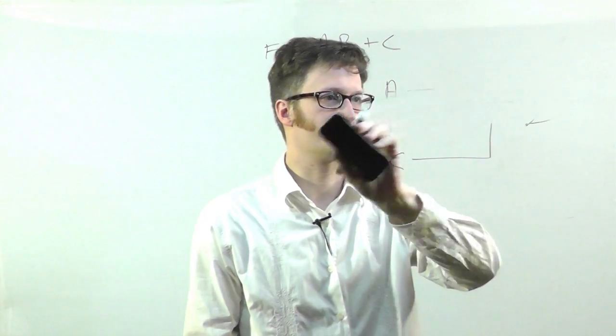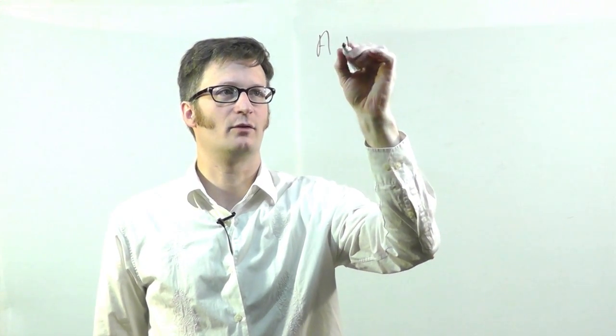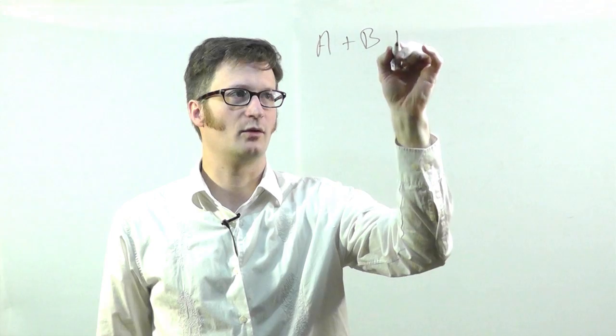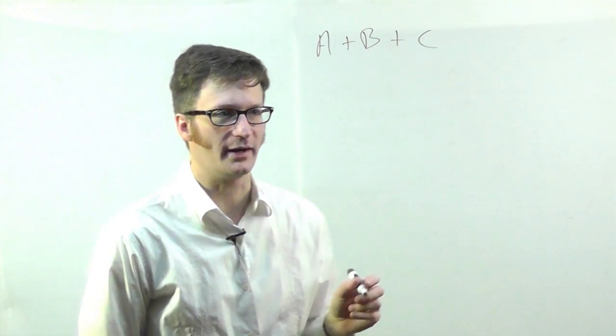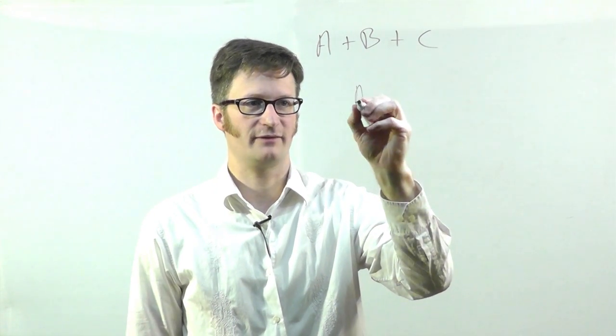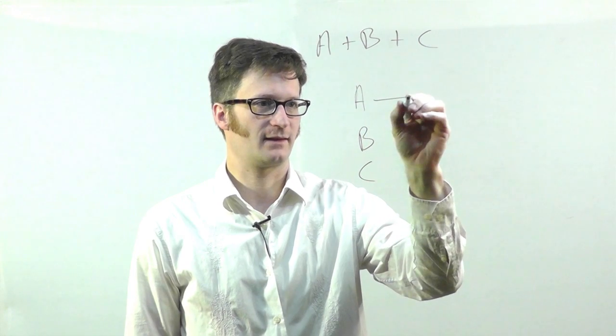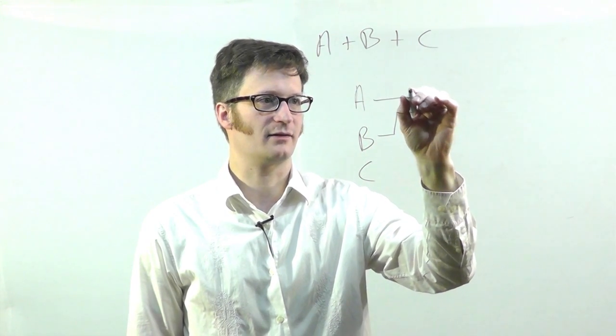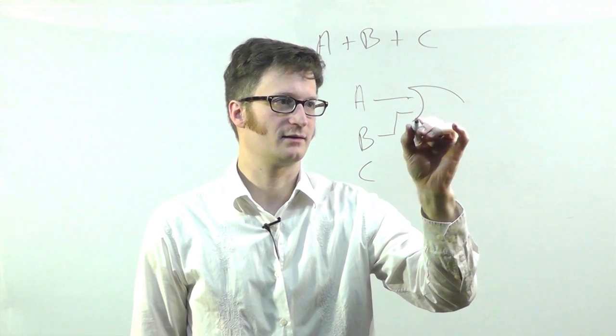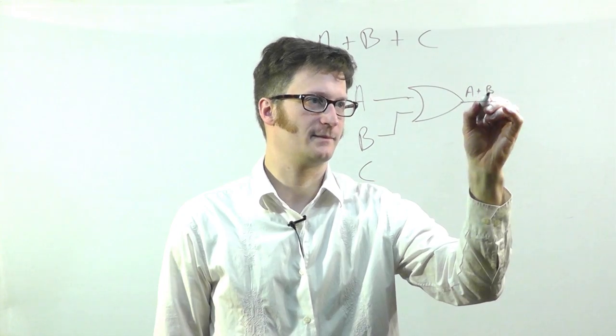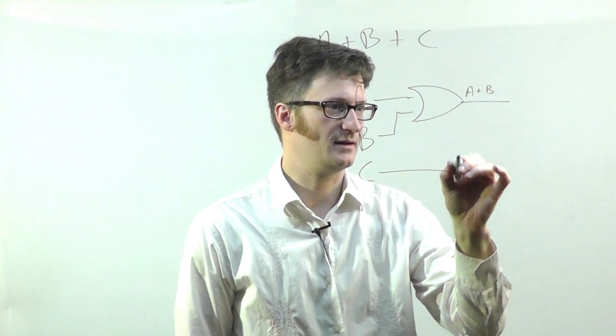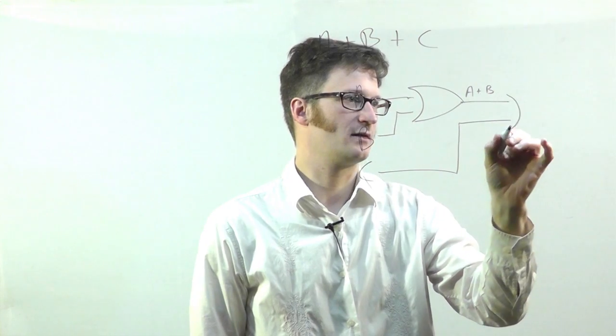Alright, let's look at another. What if I were to have A OR B OR C. One way that I can do it, and there's two ways, would be to have this. So I bring A and B together with an OR gate. So I have A OR B. And then I bring C over with another OR gate.